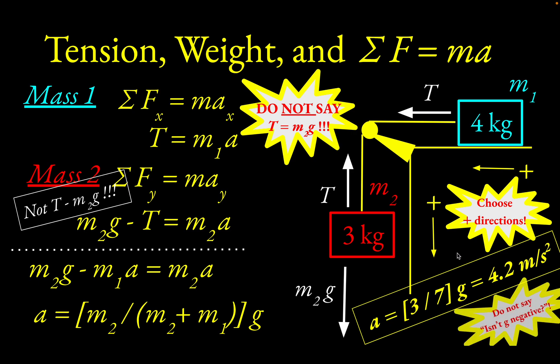One final reminder: don't ask whether G is negative here. You've already accounted for the fact that gravity acts downward when you wrote M2G minus T equals M2A. It's a bad habit to say that G is negative 9.8. Just use G equals 9.8, or 10, depending on what your physics teacher wants. In my opinion, it's a bad habit to have G itself carry a sign. That's a general approach for looking at how this system moves.